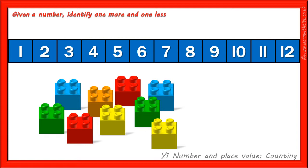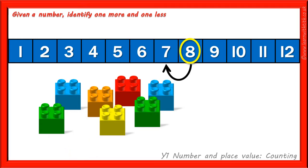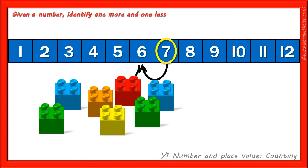So 1 less than 9 is 8. 1 less than 8 is 7. And again, we can use our number track to also find out what 2 less than any given number is, like this: 2 less than 7 is 5.